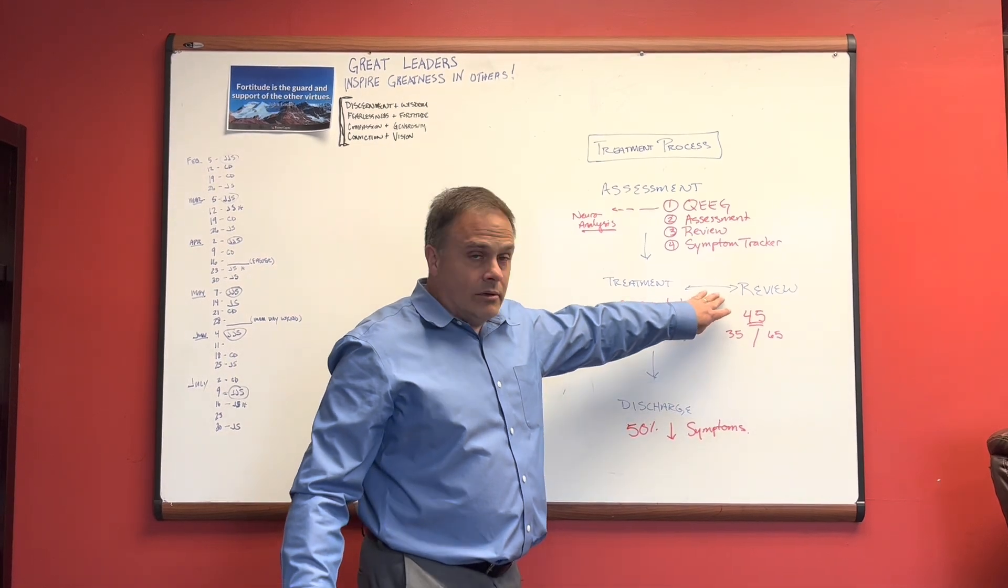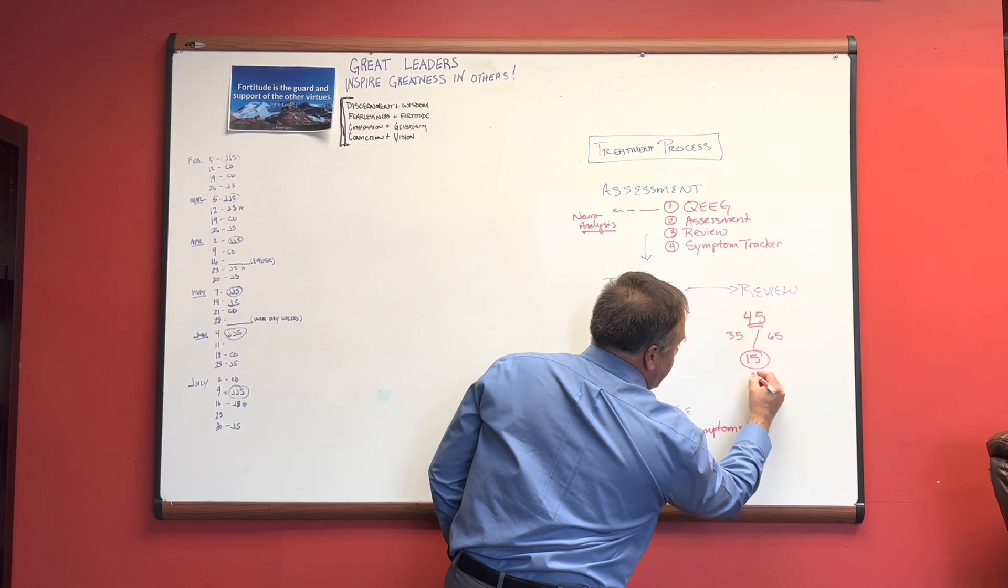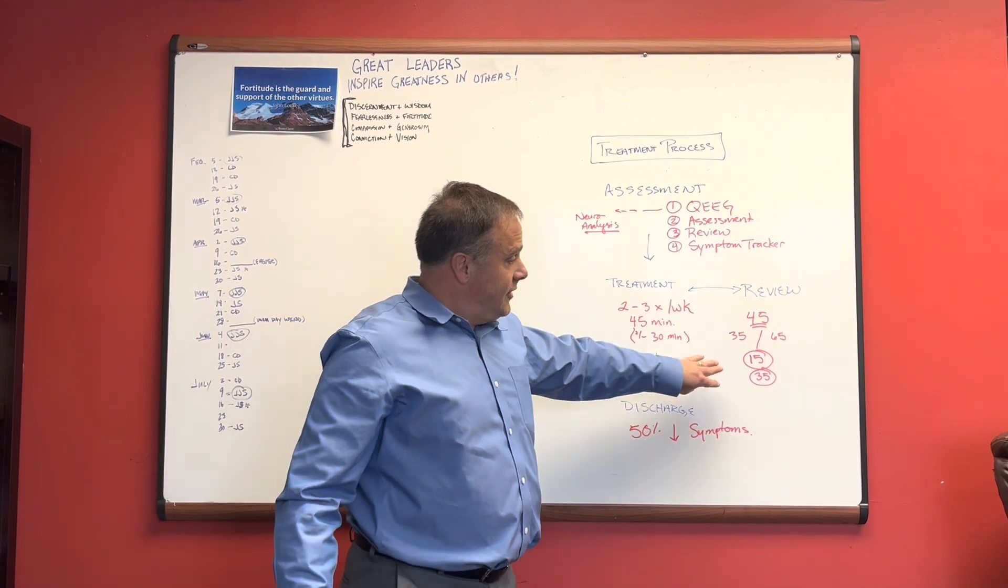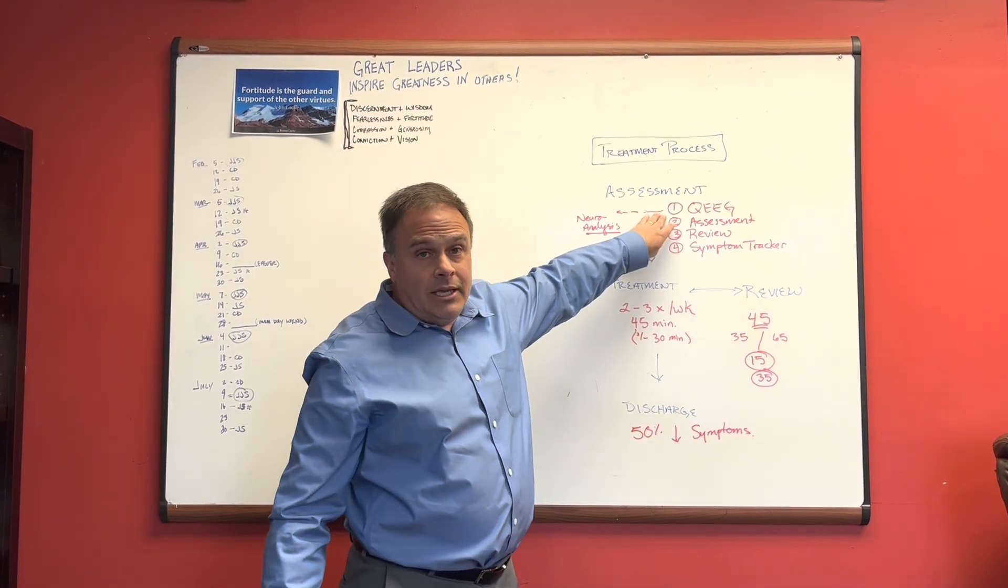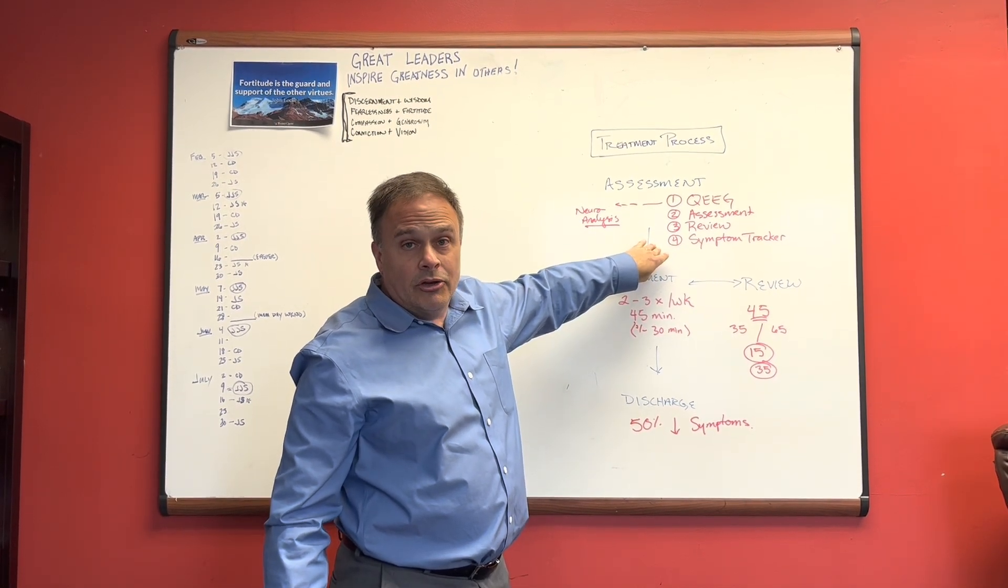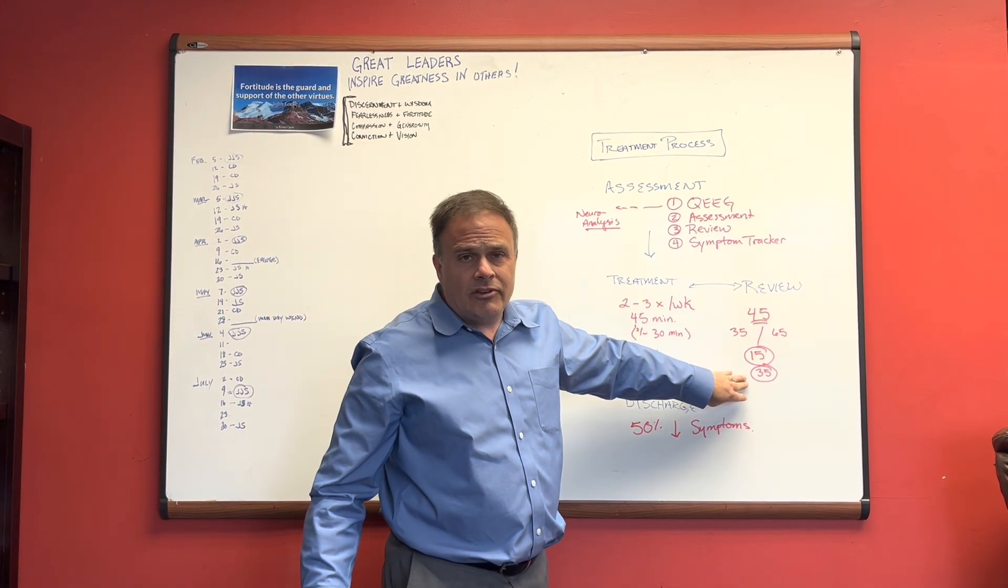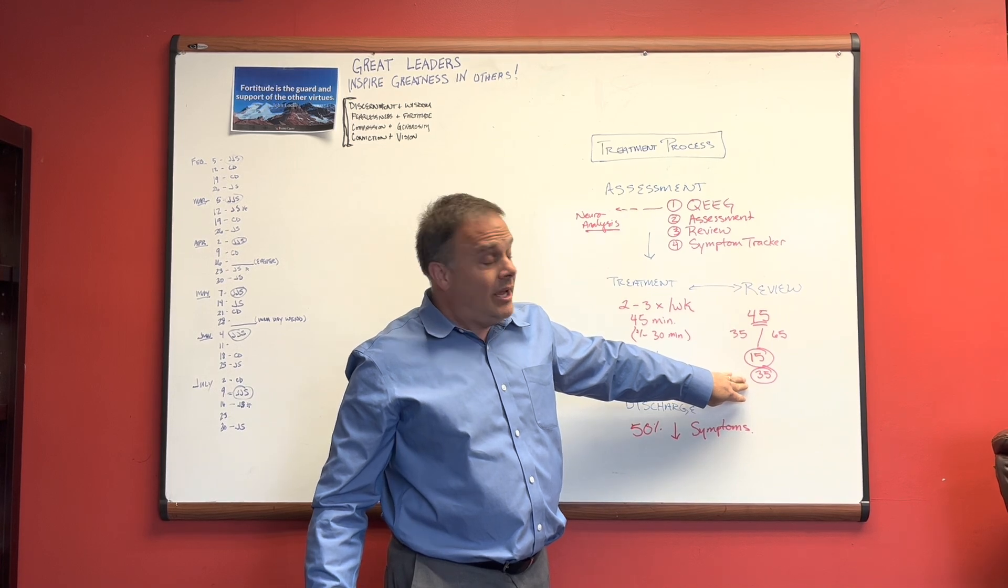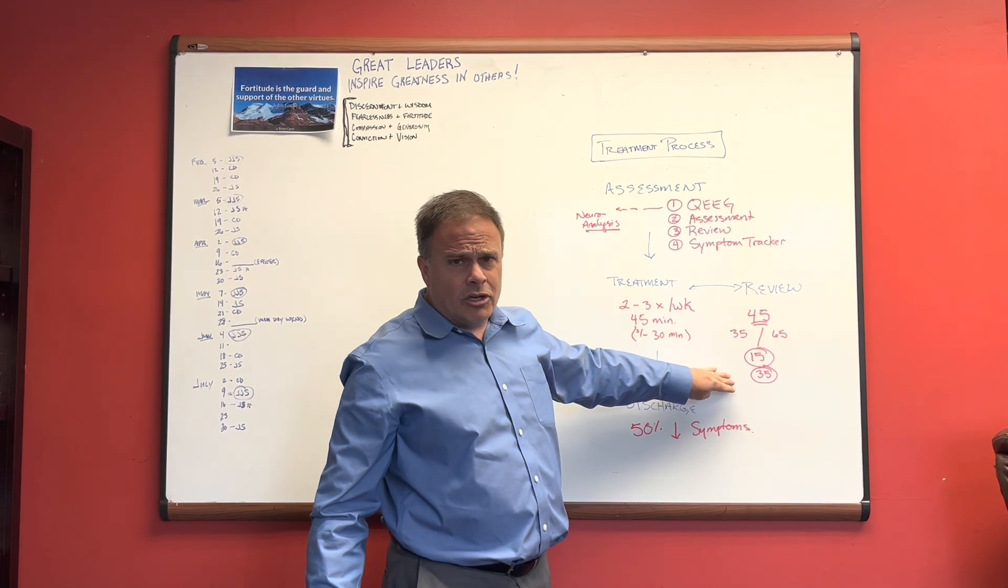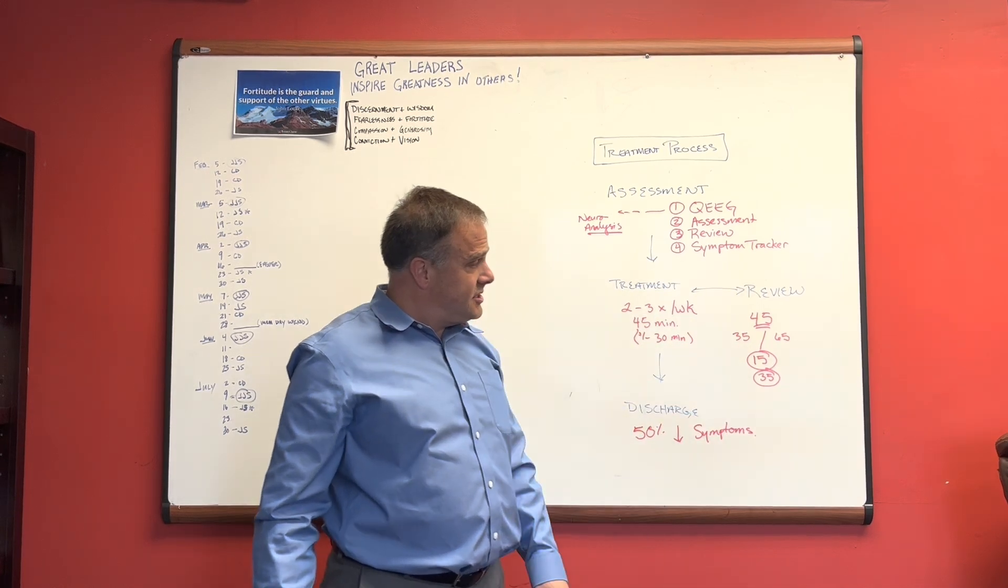And we will be reviewing periodically. So you'll have a review after the 15th appointment and after the 35th appointment in order to check in and see how you're doing. So at the 15th appointment, you would repeat the EEG. And then there would be another review where we look at the symptoms again, and we find out how you're doing and make adjustments based upon that data. Same thing typically at session 35, but that may depend on how well you're doing. If you're wrapping up, I don't need to do another EEG. We're just going to do a review. But if you're looking to go further, we'll probably do another EEG.